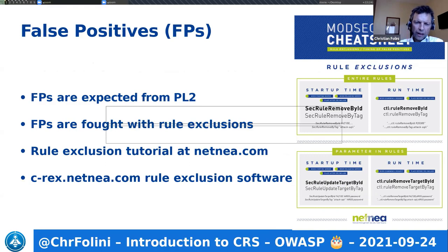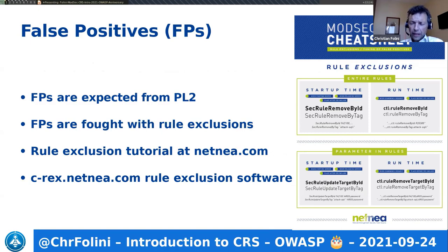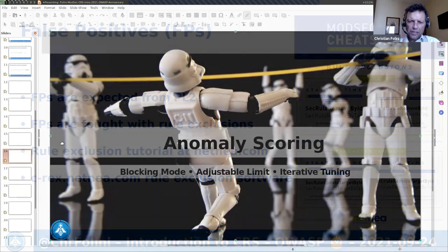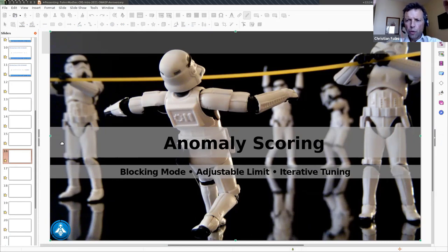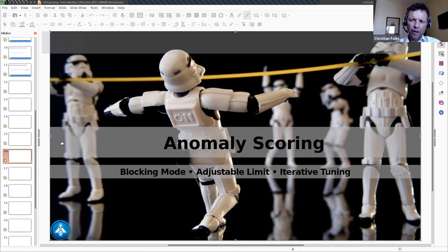False positives are expected from paranoia level two onward and you need to fight them with so-called rule exclusions. On the right you see a cheat sheet showing four conceptual variants to fight false positives. There is a very good rule exclusion tutorial at my company's website netnea.com, and there is also CRS-REX, a rule exclusion software. Anomaly scoring is a methodology that actually works in production — you reduce the anomaly pressure gradually, and as you move down with the limbo stick it gets harder and harder for attackers.